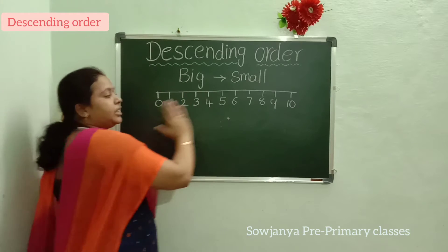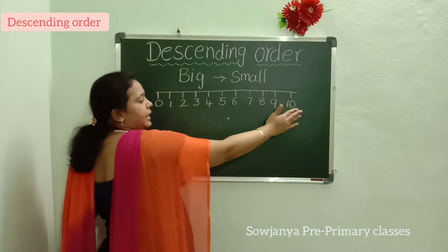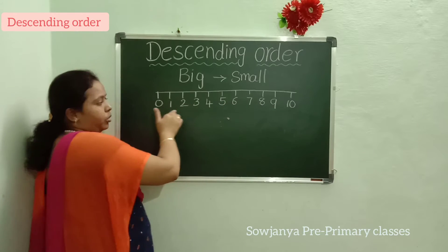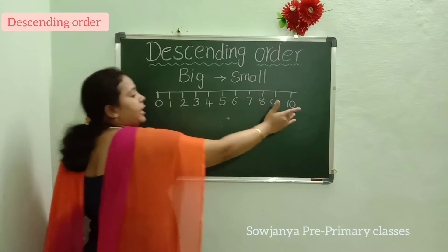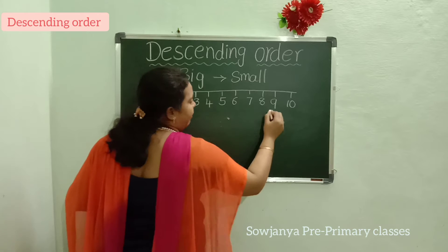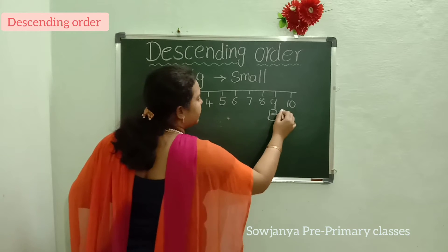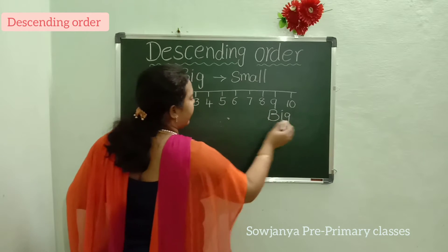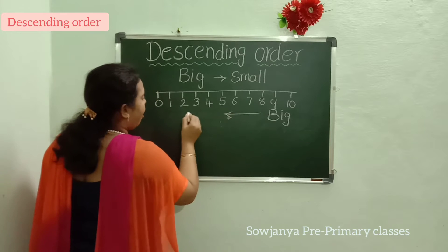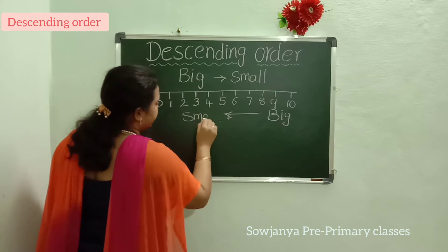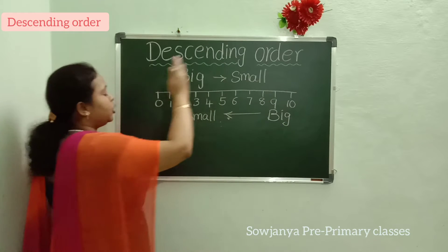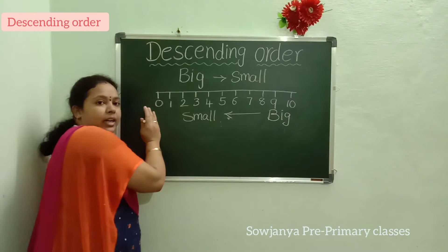So, here, which is the big number? Yes, 10. We have to see like this now — Big Number to Small Number. Our right side will be the big number, and our left side, it will come to the small number.